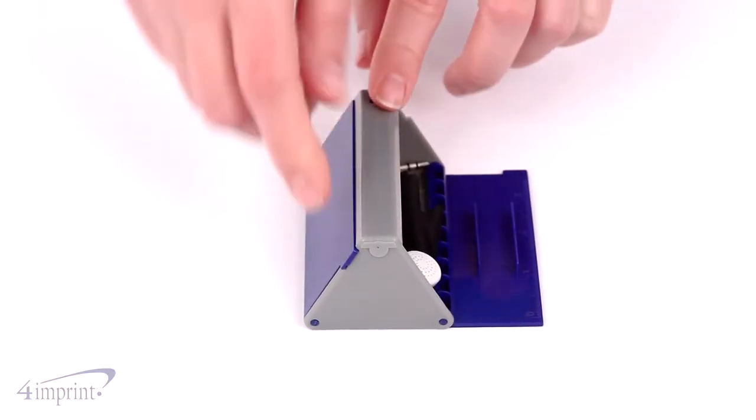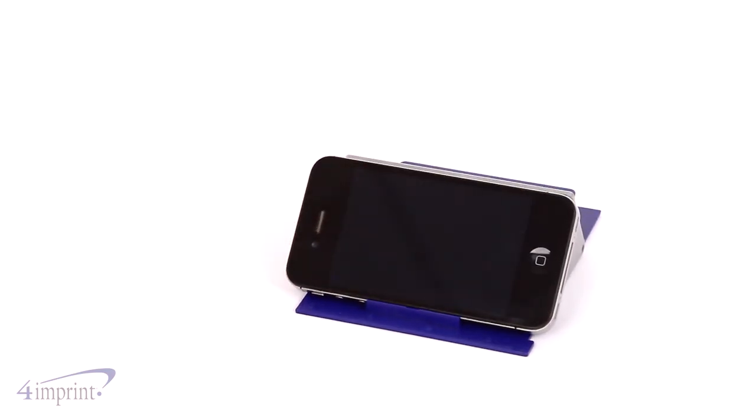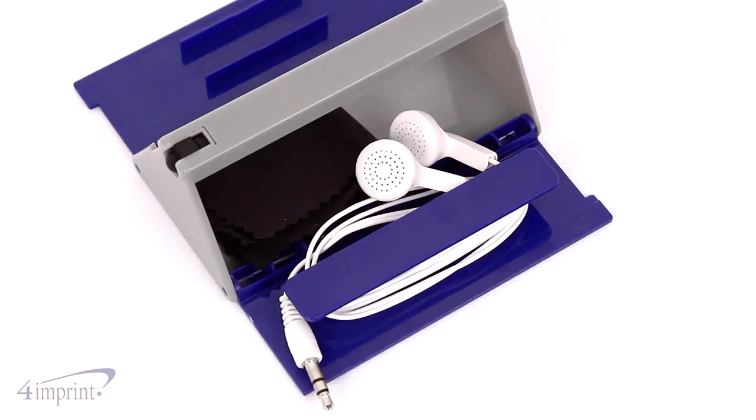The sides of the box fold open to reveal more items. On one side, you'll find a media stand so you can prop up your mobile device. On the other side, you'll find earbuds so you can listen to your favorite music anywhere.